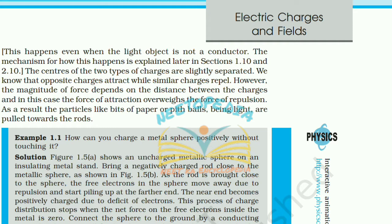When electrified rods are brought near light objects, the rods induce positive charges on the near surfaces of the objects and similar charges move to the farther side. The centers of the two types of charges are slightly separated. Since the magnitude of force depends upon the distance between charges, the force of attraction overweighs the force of repulsion. As a result, particles like bits of paper or pit balls being light are pulled towards the rods.